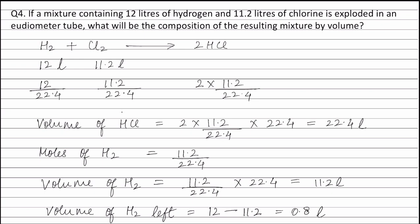Therefore, volume of hydrogen taking part in the reaction is 11.2 liters, volume of hydrogen left is 0.8 liters, and volume of HCl formed is 22.4 liters.